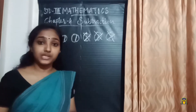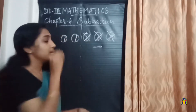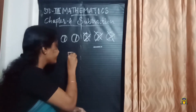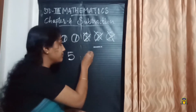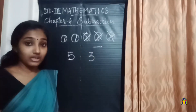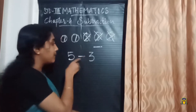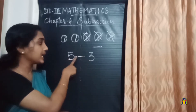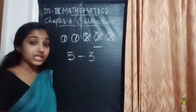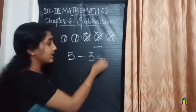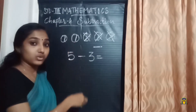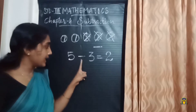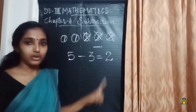The symbol we use for subtraction is the minus symbol. Now let's write this in figures. I had five balls and gave three balls to my friend, so we write it as five minus three. We have subtracted three from five, and the answer we get is two.